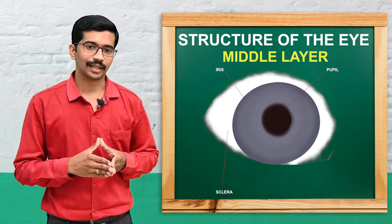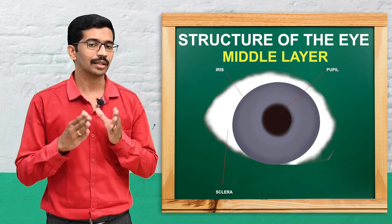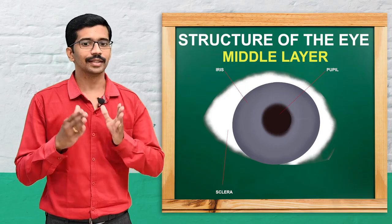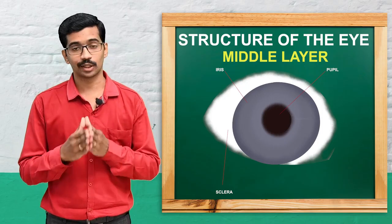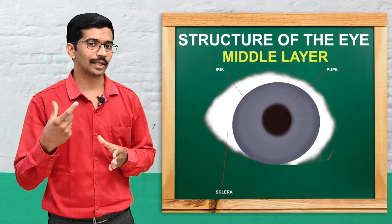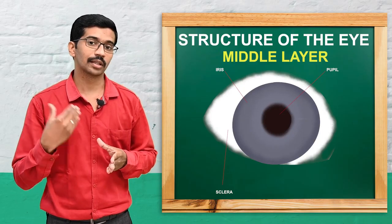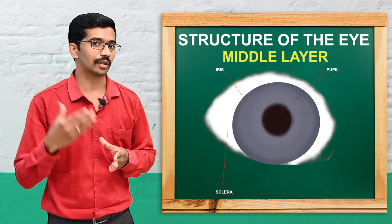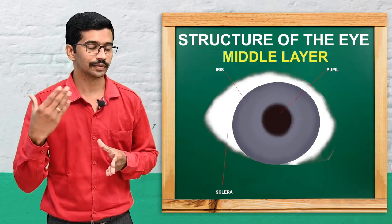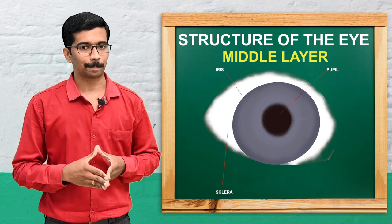The lens is a highly elastic, circular, biconvex body through which light passes and travels to the retina.